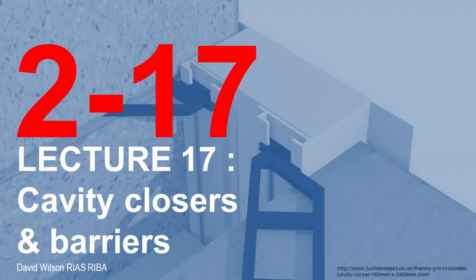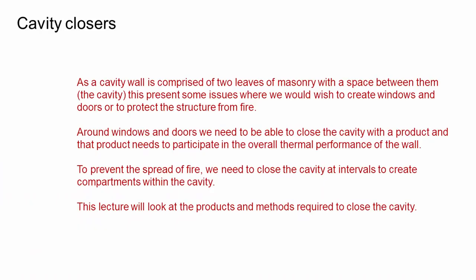Hello, this is lecture 17. This lecture is going to look at cavity closers and cavity barriers. A cavity wall is made up of two separate leaves of masonry with a space between, which brings up some issues where we might wish to create windows and doors and maintain protection of the structure from fire and also maintain the thermal performance of the wall.